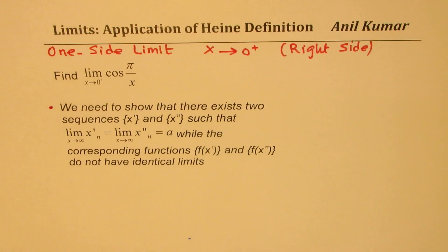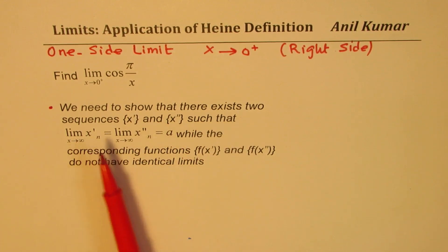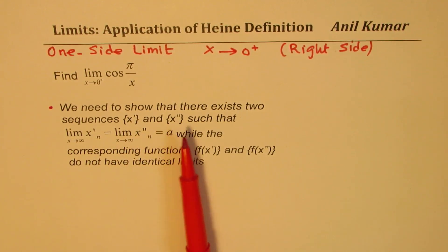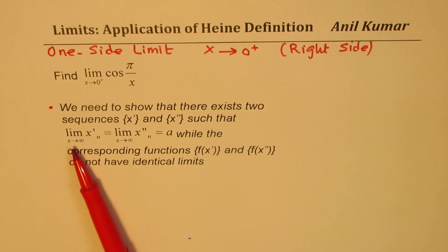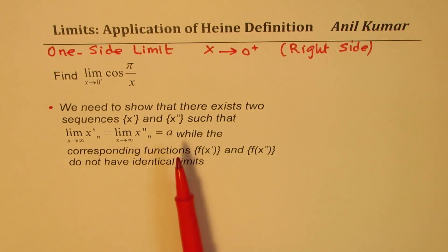So that is the concept which we are going to use to solve this particular question. We need to show that there exists two sequences, x prime and x double prime, such that the limit of x prime as n approaches infinity equals the limit of x double prime when n approaches infinity, which is a, while the corresponding functions f of x prime and f of x double prime do not have identical limits. This is all we have to do to show that this limit does not exist. The idea here is to find two functions which could help us solve this particular question.